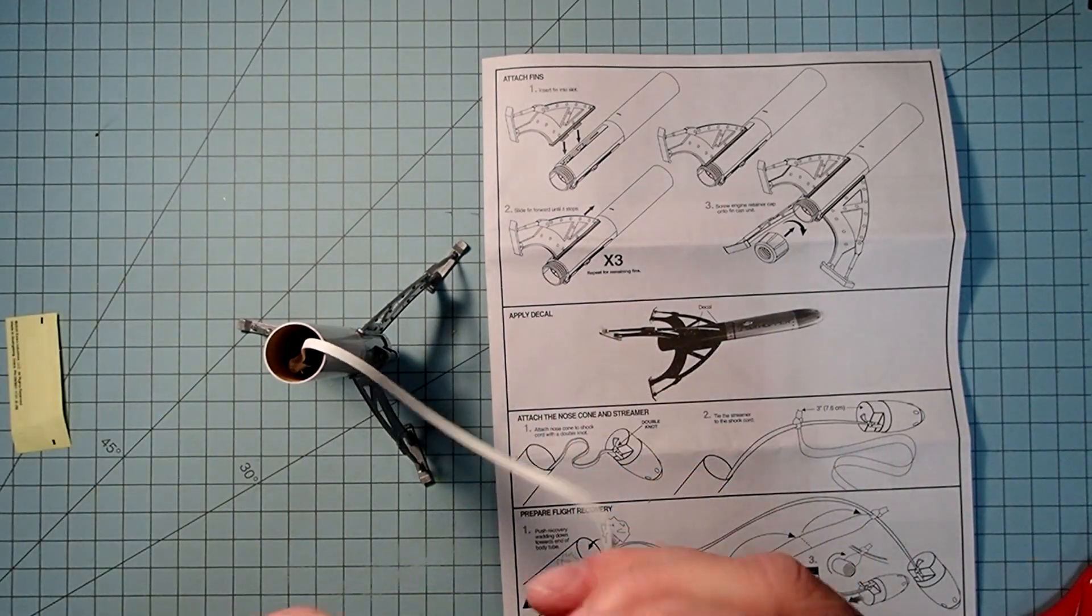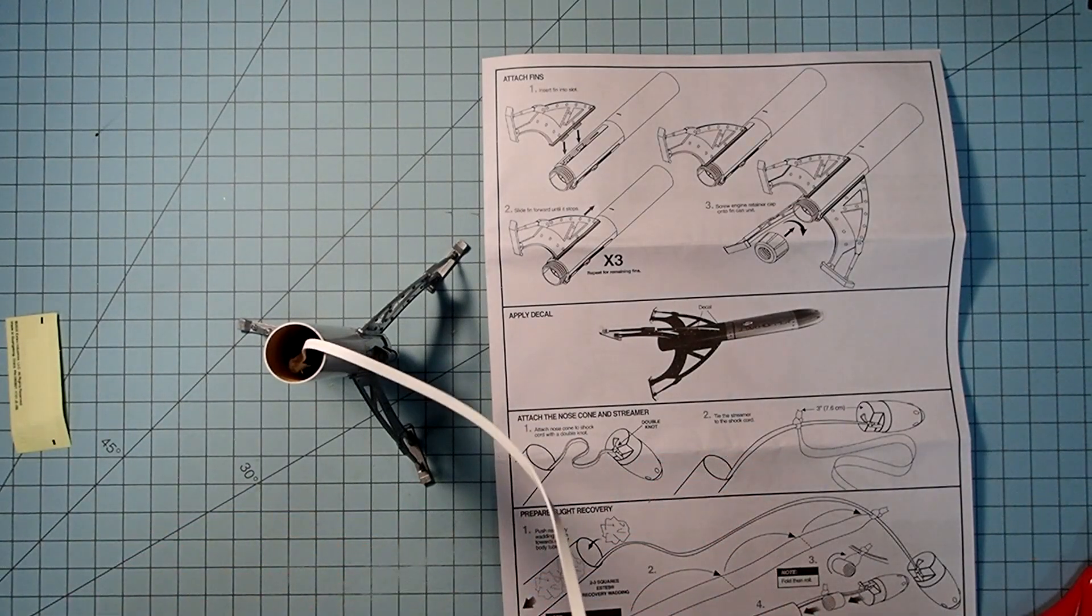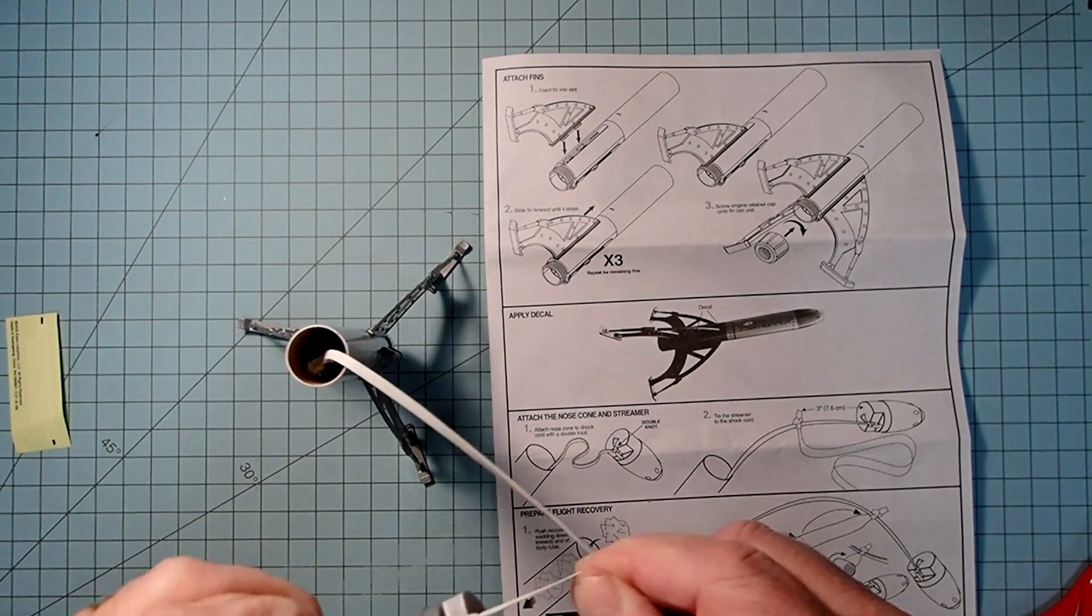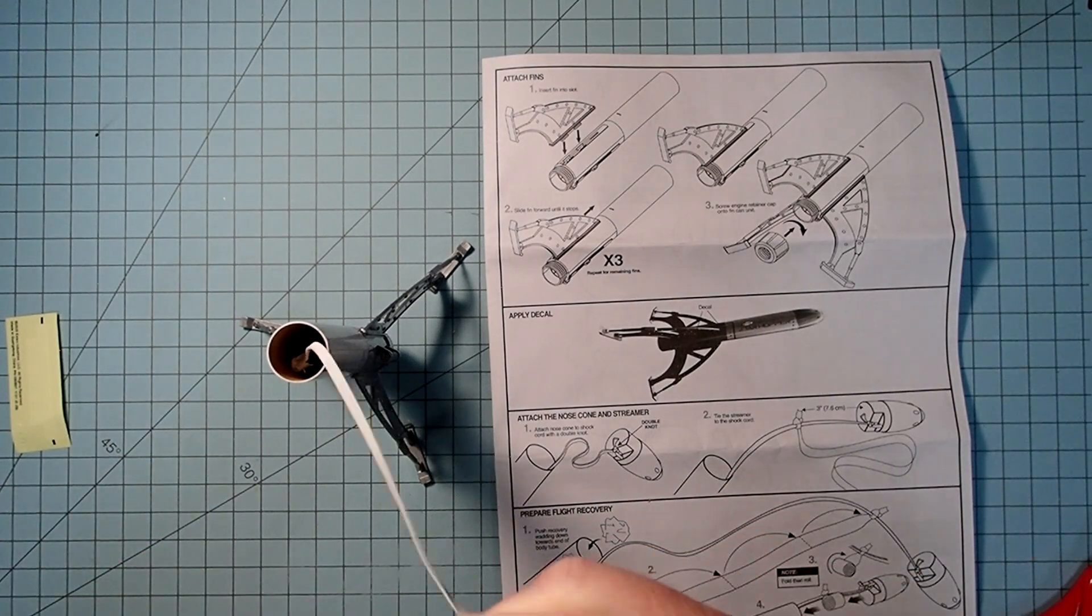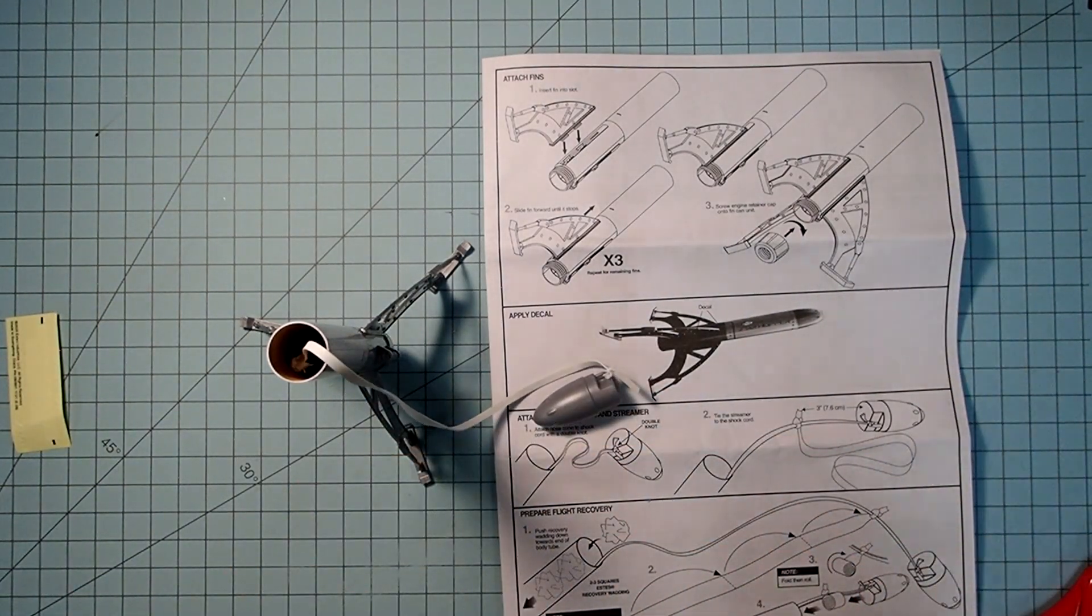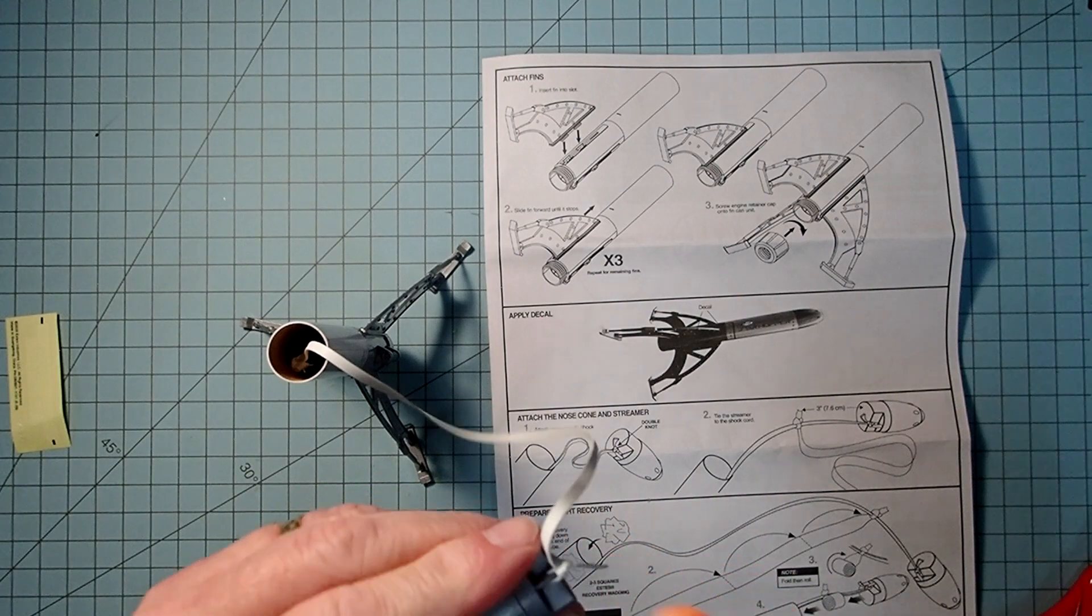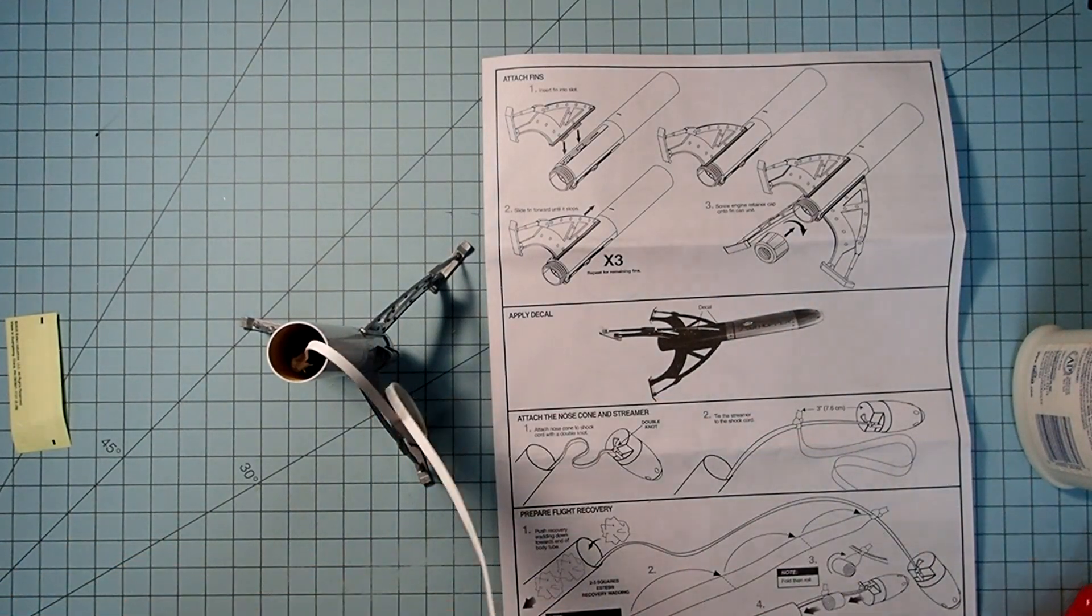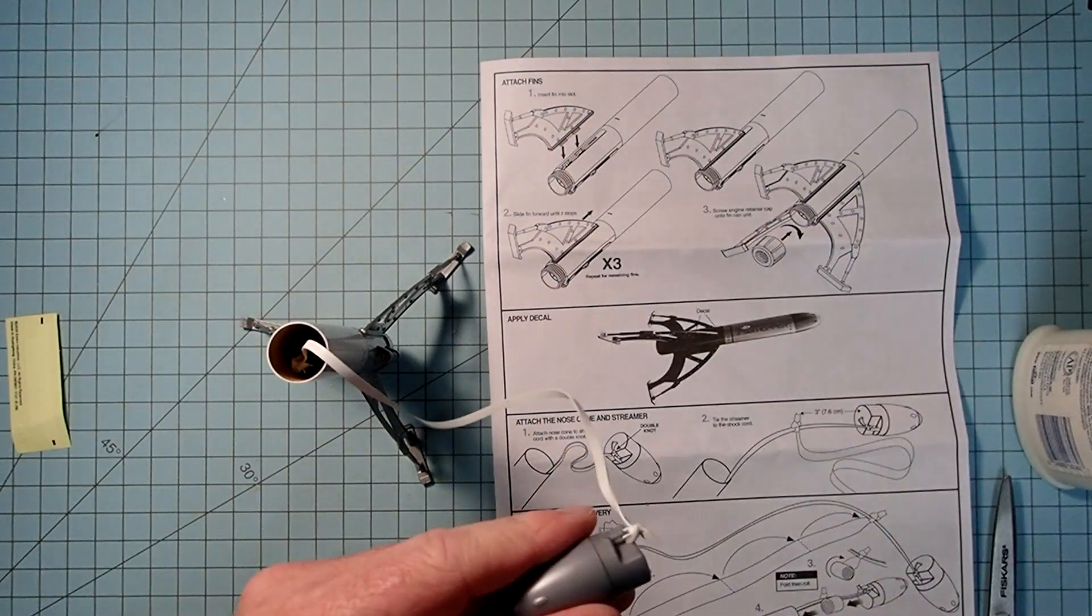Next, we need our shock cord and the nose cone. Just like we did on the other end, we're going to tie a double knot in this. And once again, go ahead and just add a little tiny drop of wood glue or white glue if you have it. That's just to lock the knot into place. And then once more, go ahead and trim this back to about five to six millimeters or about a quarter of an inch.